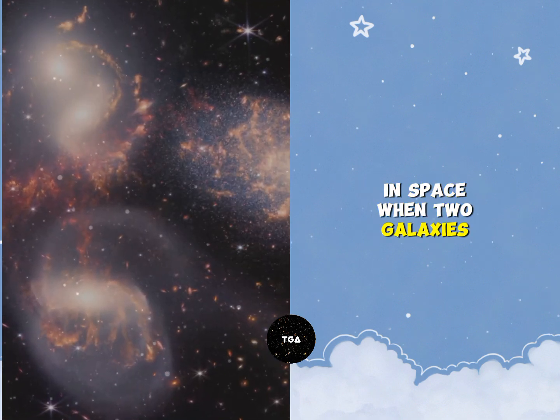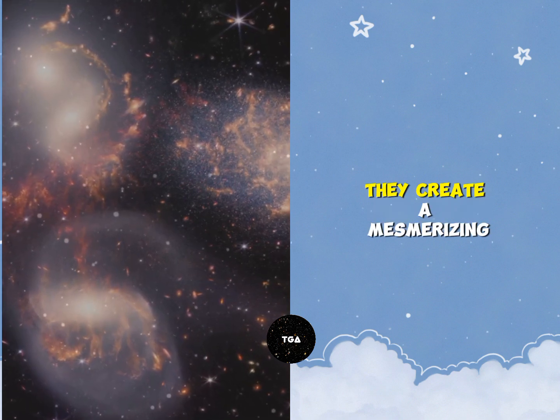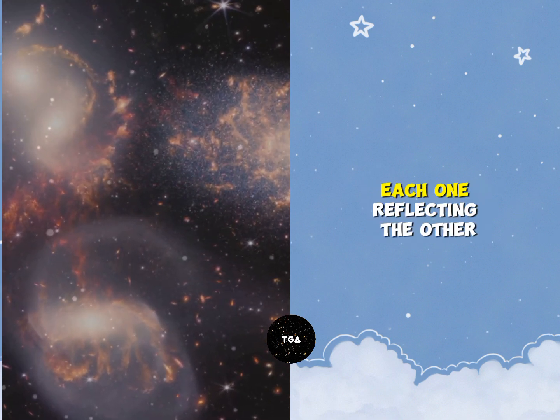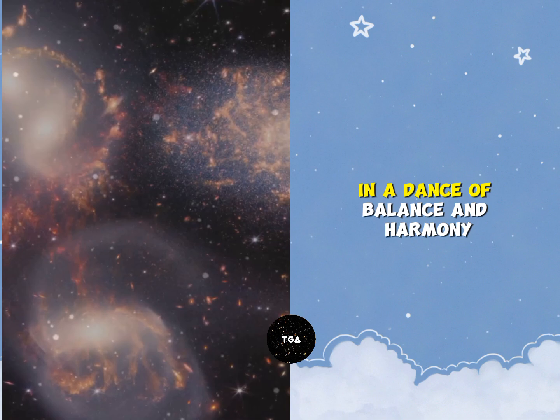In space, when two galaxies are aligned, they create a mesmerizing symmetrical pattern, each one reflecting the other in a dance of balance and harmony.